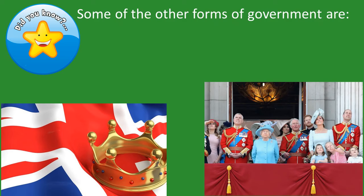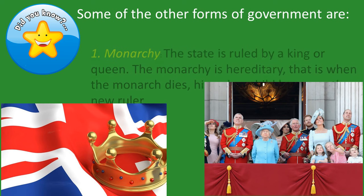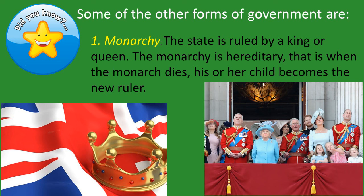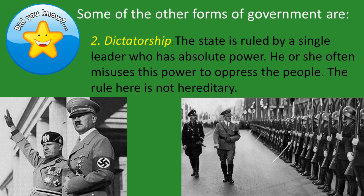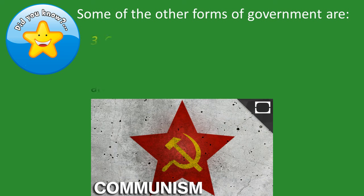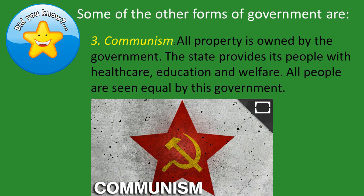Some of the other forms of government are: 1. Monarchy — the state is ruled by a king or queen. The monarchy is hereditary; that is, when the monarch dies, his or her child becomes the new ruler. 2. Dictatorship — the state is ruled by a single leader who has absolute power. He or she often misuses this power to oppress the people. The rule here is not hereditary. 3. Communism — all property is owned by the government. The state provides its people with healthcare, education, and welfare. All people are seen as equal by this government.